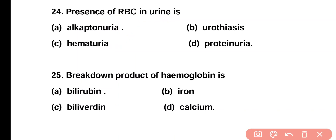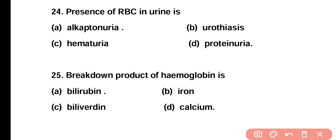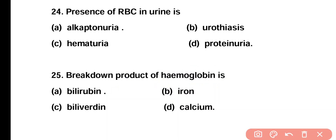Question number 25. Breakdown product of hemoglobin is: bilirubin, iron, biliverdin, or calcium? Correct answer is option A. Bilirubin is the end product of breakdown of hemoglobin in the liver.